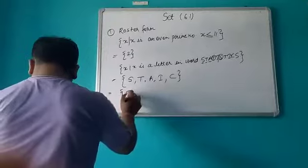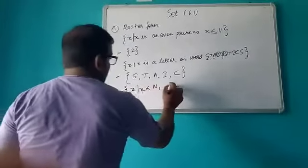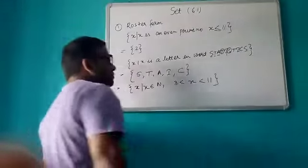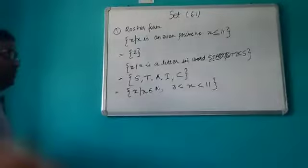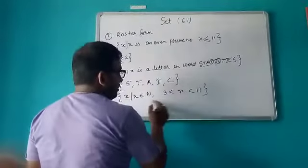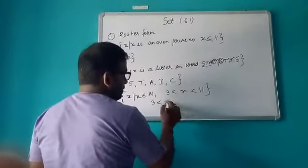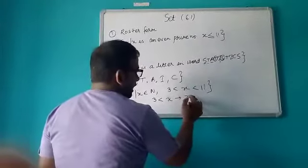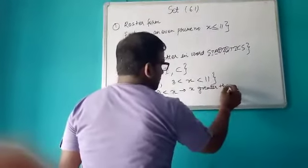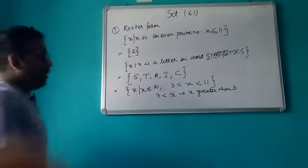Suppose the question says: x belongs to natural numbers and x lies between 3 and 11. This is an important type — many questions will look like this. 'Lies between 3 and 11' means x is greater than 3.